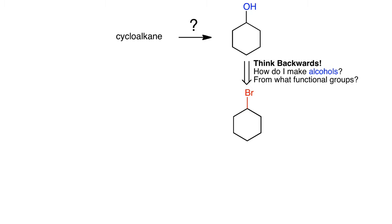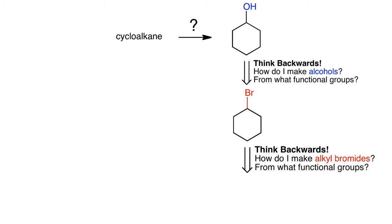This is an alkyl bromide, and I need to start with just a cycloalkane, so I keep going. I ask again: how do I make alkyl bromides this time? Or from what other functional groups can I make an alkyl bromide? And now I think I can do that from just cyclohexane — and this is a cycloalkane.